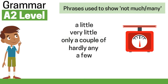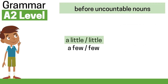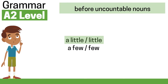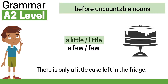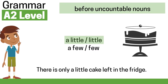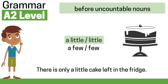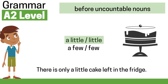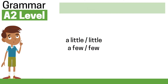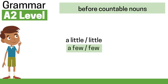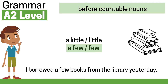You use 'a little' or 'little' before uncountable nouns. For example: 'There is only a little cake left in the fridge.' You use 'a few' or 'few' before countable nouns. For example: 'I borrowed a few books from the library yesterday.'